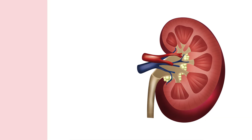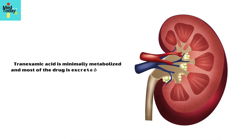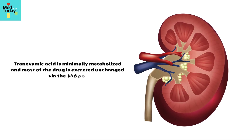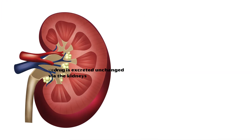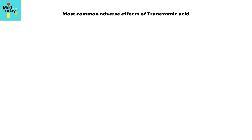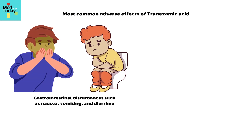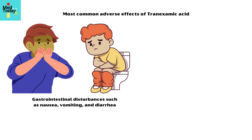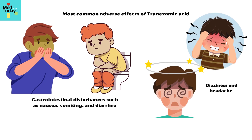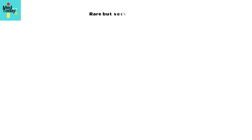Tranexamic acid is minimally metabolized and most of the drug is excreted unchanged via the kidneys. The most common adverse effects include gastrointestinal disturbances such as nausea, vomiting, and diarrhea, as well as dizziness and headache.